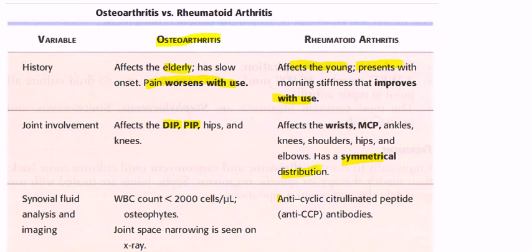In osteoarthritis, the distal interphalangeal joints show Heberden nodes and the PIP joints show Bouchard nodes. Synovial fluid analysis shows a WBC less than 2000 cells. Imaging in osteoarthritis reveals osteophytes, subchondral cysts, and joint space narrowing on X-ray.